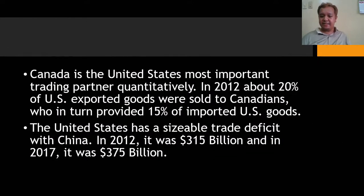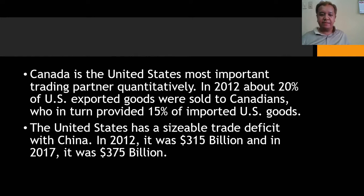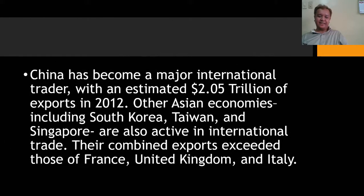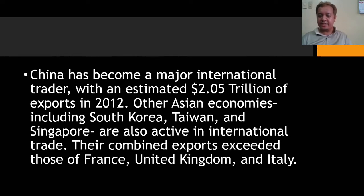Canada is the United States' most important trading partner; in 2012, about 20% of US exported goods were sold to Canadians, who provided 15% of imported US goods. The US has a sizable trade deficit with China — 315 billion dollars in 2012 and 375 billion dollars in 2017. China has become a major international trader with an estimated 2.5 trillion dollars in exports in 2012. Other Asian economies — South Korea, Taiwan, and Singapore — are also active in international trade; their combined exports exceed those of France, the United Kingdom, and Italy.